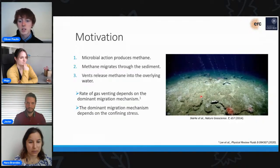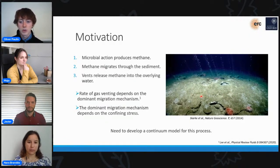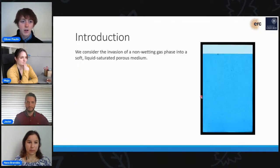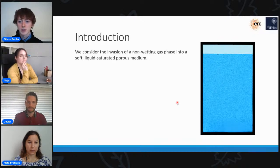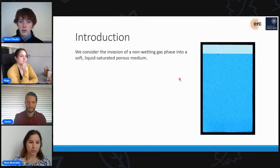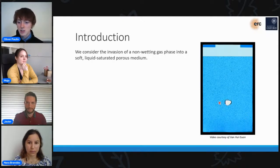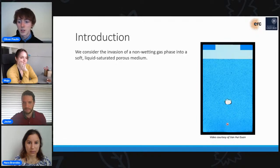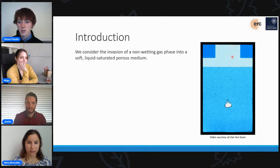One of the reasons why this is an interesting system to study is that the rate of gas venting from the sediment depends strongly on the dominant gas migration mechanism within it. The pore-scale physics that controls these different migration mechanisms is relatively well understood, but the focus of this project has been to develop a continuum model which describes the behaviour that we see. So we can reproduce the behaviour that we see in nature experimentally by considering a quasi-2D flow cell, such as the one you can see on the right here, which we fill with a close packing of squishy hydrogel beads, and then saturate it with a liquid. What we then do is we inject a small amount of non-wetting gas into the base of the flow cell and see what happens.